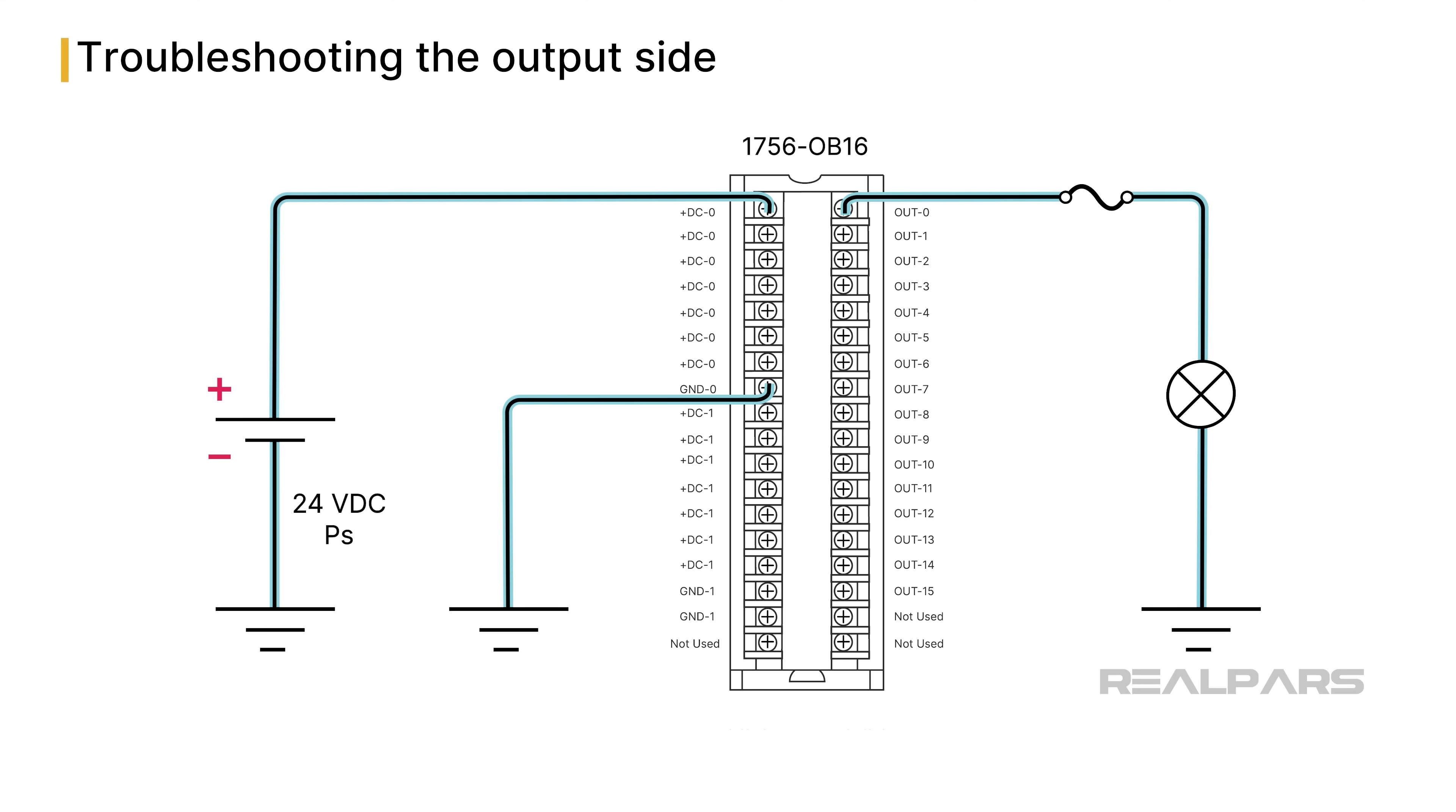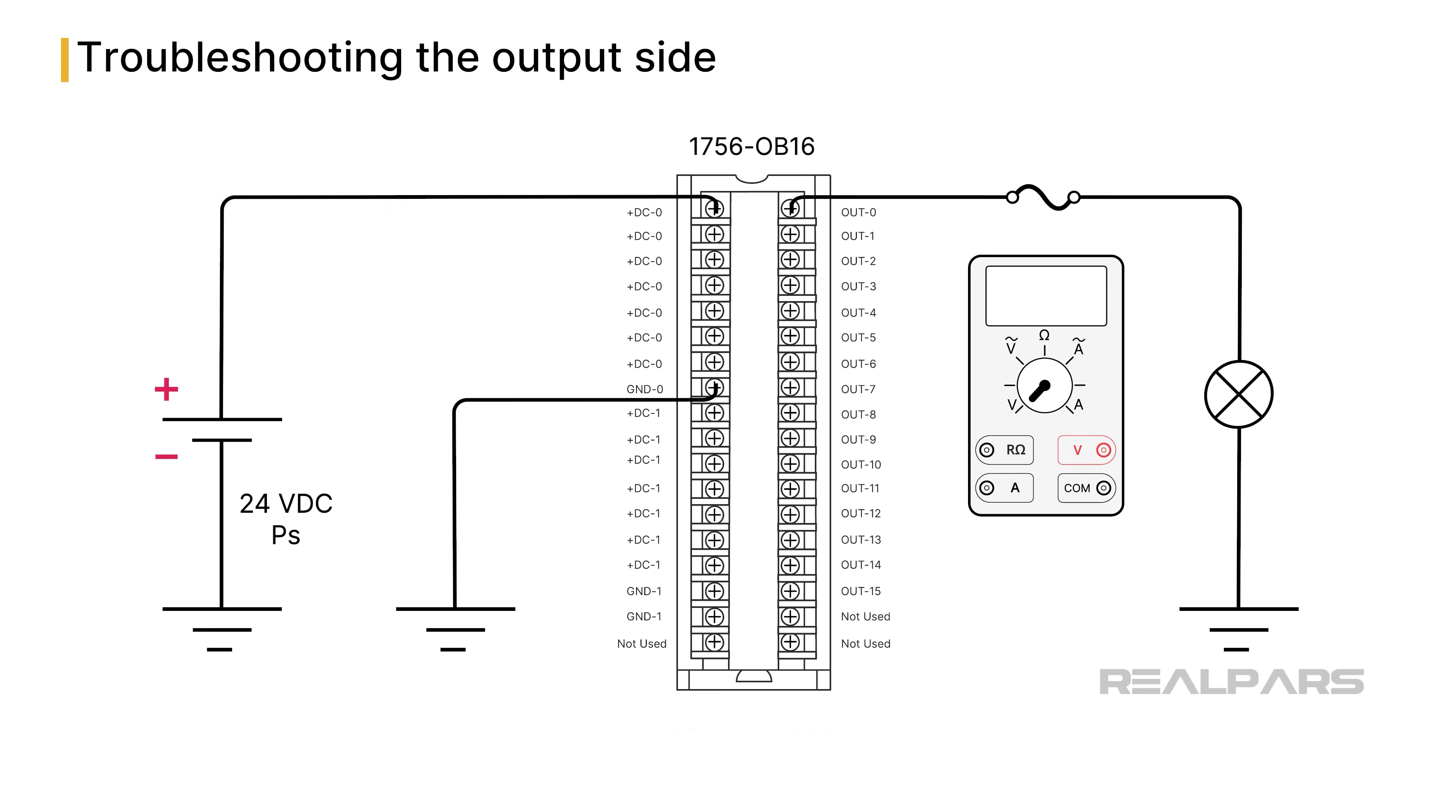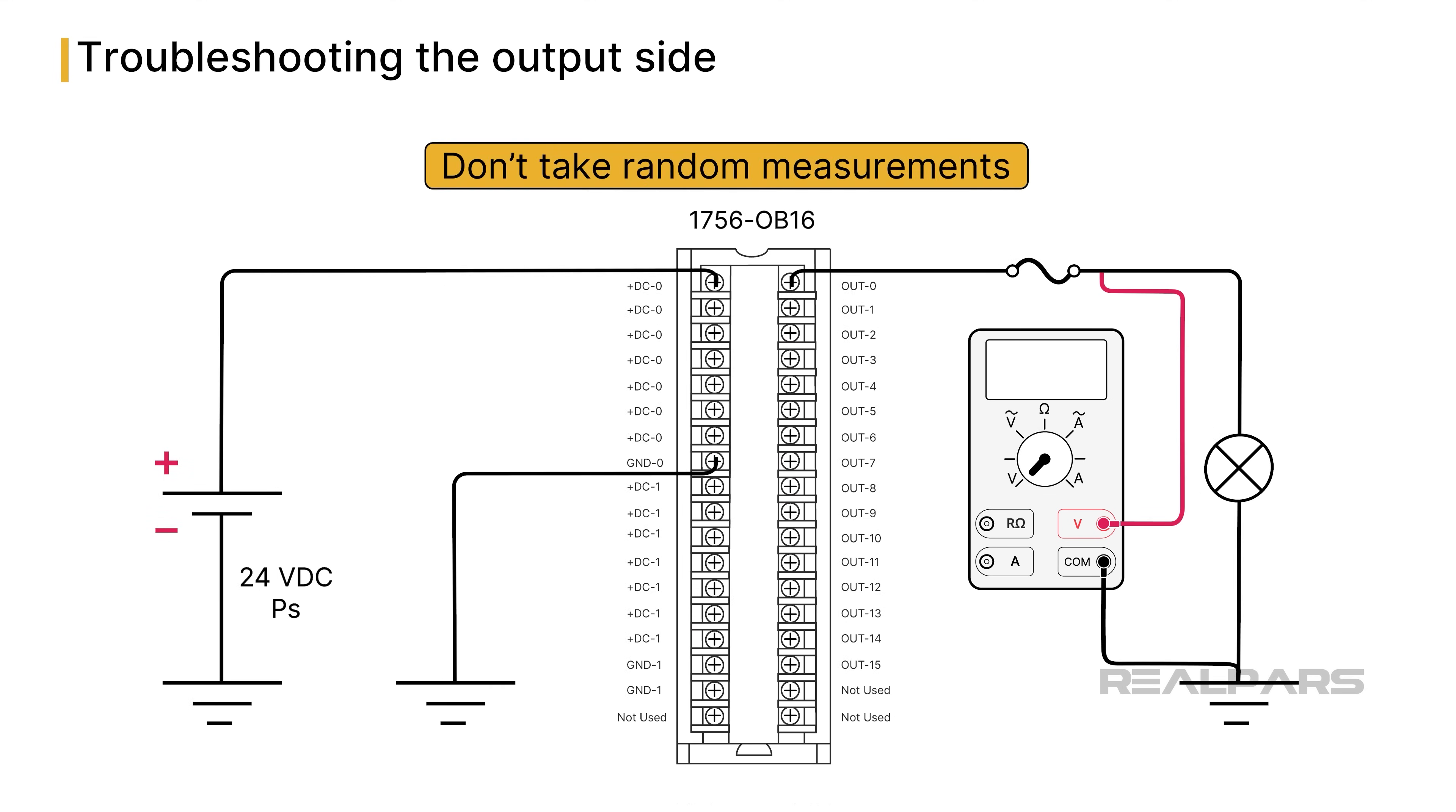Now, it's time to make some measurements with the digital multimeter, or DMM. We'll start by placing the voltmeter between the fuse and the lamp. Remember what we said earlier, don't make any measurements if you don't know what you expect. Each measurement should lead to the subsequent measurement. Taking random measurements serves no purpose but to confuse you. If the voltmeter reads 0 volts, the fault is likely an open fuse.